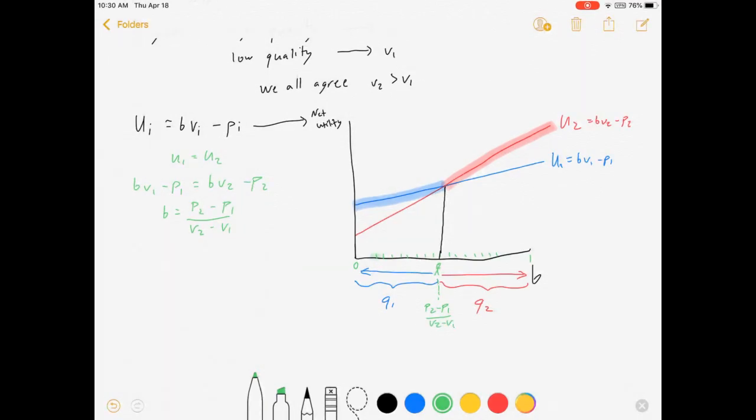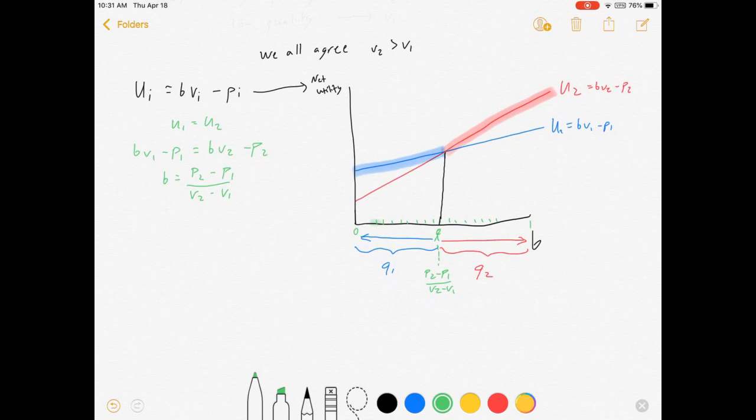So there we go, we now know that the demand for firm one is θ - it's the area left of the curve, so between zero and θ is just θ, is p2 minus p1 over v2 minus v1. And the demand for firm two is 1 minus θ, which is v2 minus v1 minus p2 plus p1 all over v2 minus v1. Alright, we know our demands for the different products.